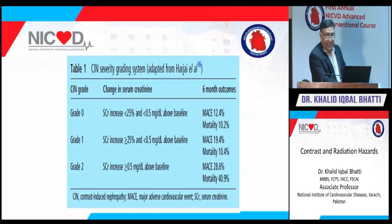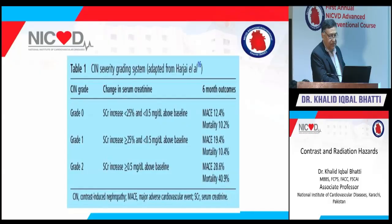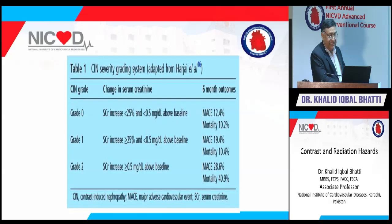Contrast nephropathy severity can be graded. In Grade 0, serum creatinine is less than 0.5 mg/dL above baseline; major adverse cardiovascular events occur in about 19% and mortality is about 10%. In Grade 2, serum creatinine is more than 0.5 mg/dL above baseline; major adverse cardiac events rise to approximately 28% and mortality to around 40% — a very significant difference.